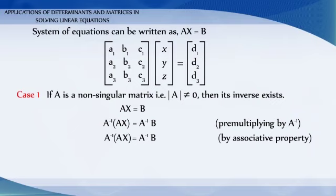By associative property, we can write this as A inverse multiplied by A into X equals A inverse into B. Now A inverse into A equals the identity matrix.